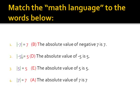Here are the answers. The absolute value of negative seven is seven. The absolute value of negative five is five. The absolute value of five is five. The absolute value of seven is seven.